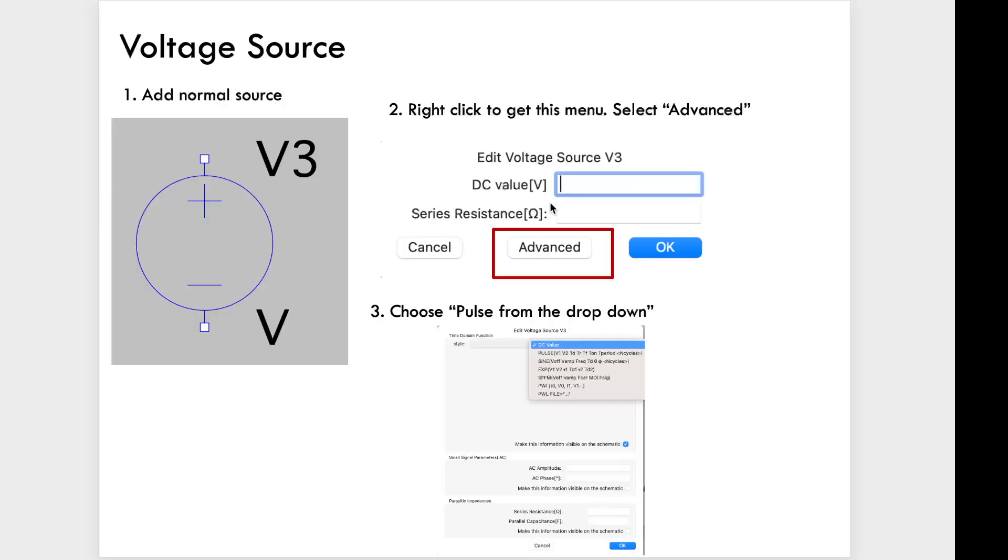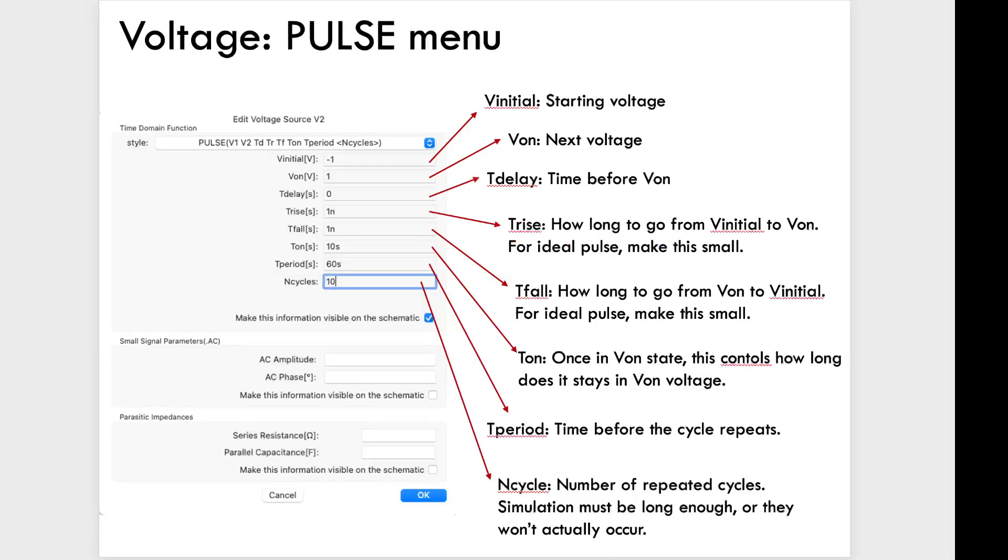All right, so what about the voltage source that controls the voltage controlled switch? You're going to add that source. And then you are going to add a normal voltage source, then you're going to right click to get this another menu, you're going to right click to pull this up. Normally, you'd hit just a DC value. But if you hit advanced, it's going to pop open another menu. And on that menu, you have a drop down.